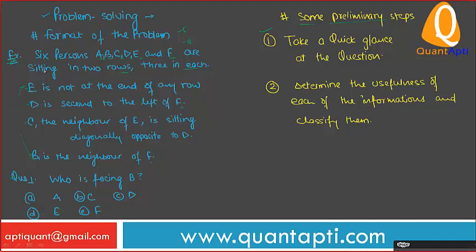Very good. This is a simple type of format. You can solve it, but if we follow the steps, it becomes even easier. So the first step is: read the question, and after performing this step you would develop a general idea — the general theme of the problem. Reading it in a couple of seconds, we understand the general theme: there are six persons who need to be arranged in two rows.